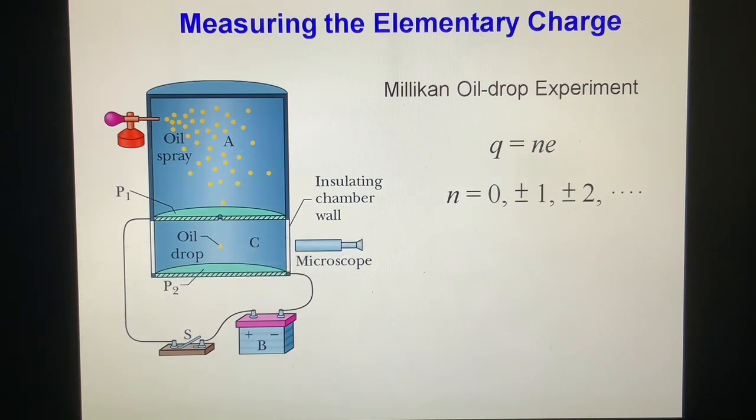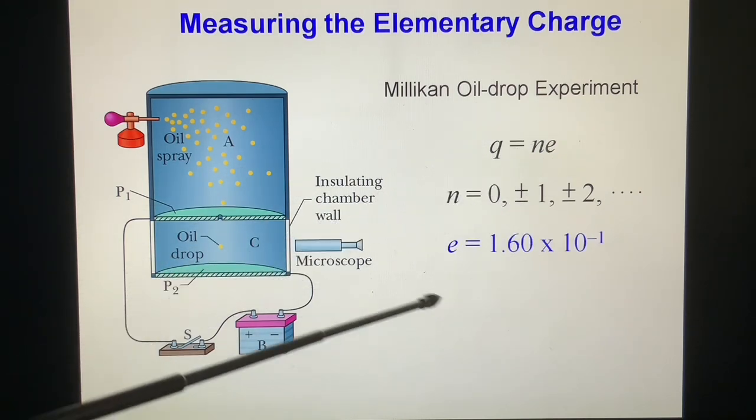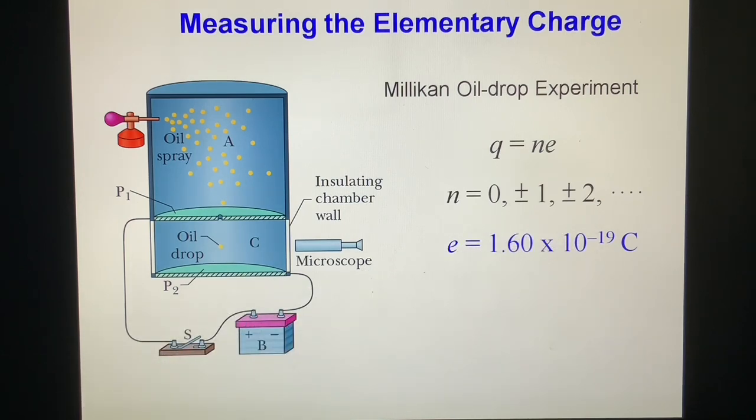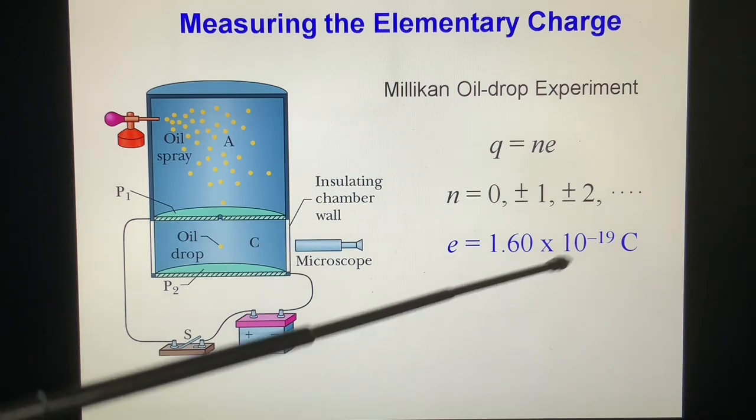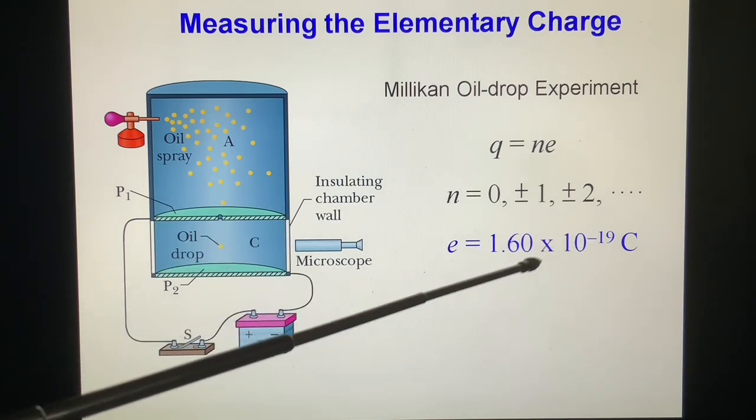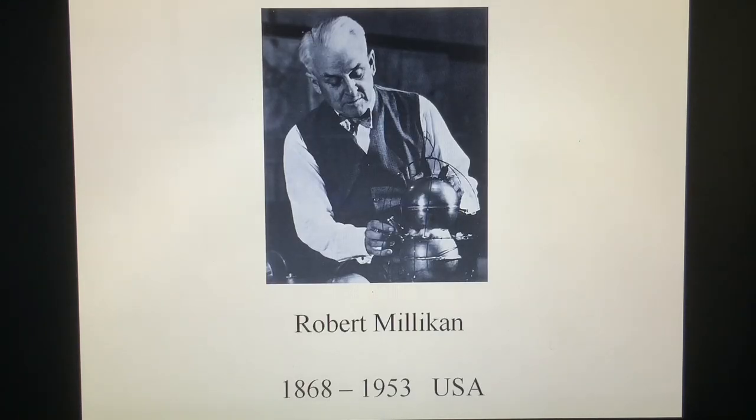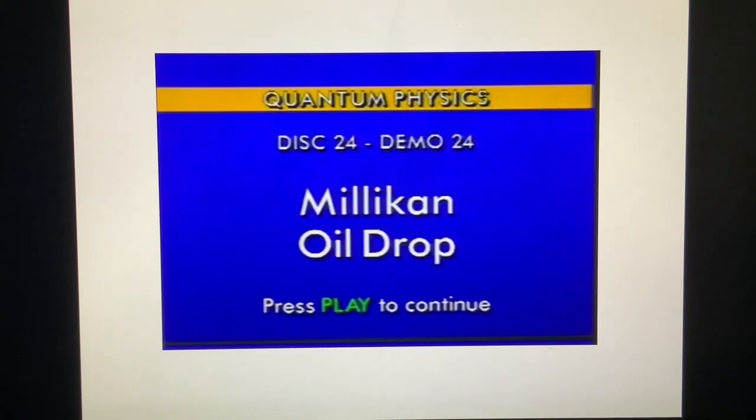And this elementary charge is 1.60 times 10 to the power of minus 19 coulomb. This is the charge which electron or proton carries. Because of this experiment in 1923, he got Nobel Prize in physics. This is American. This is Millikan oil drop.